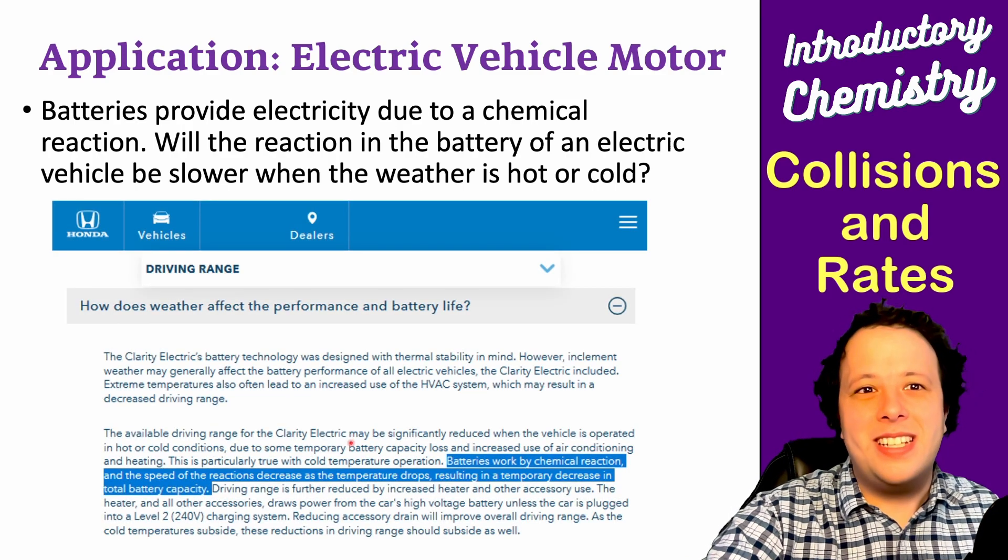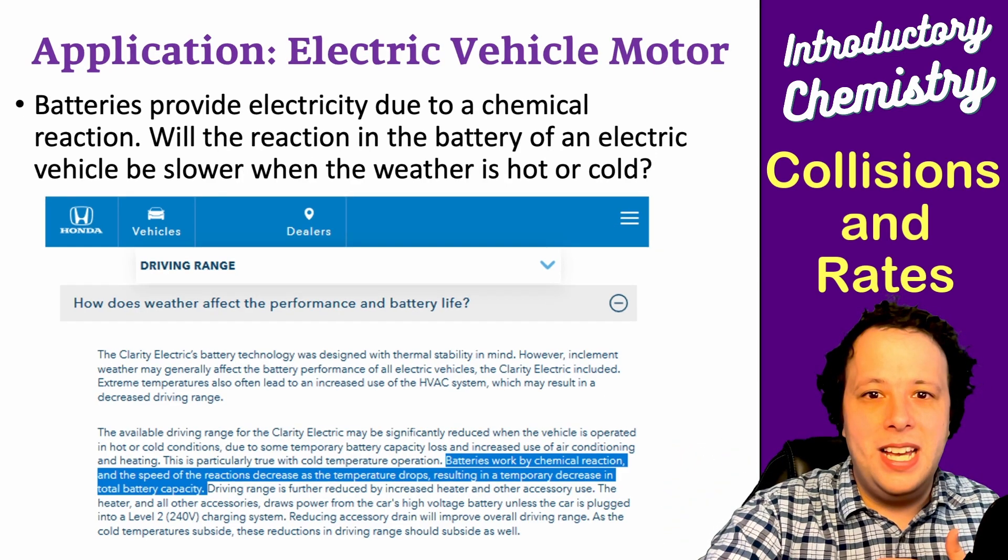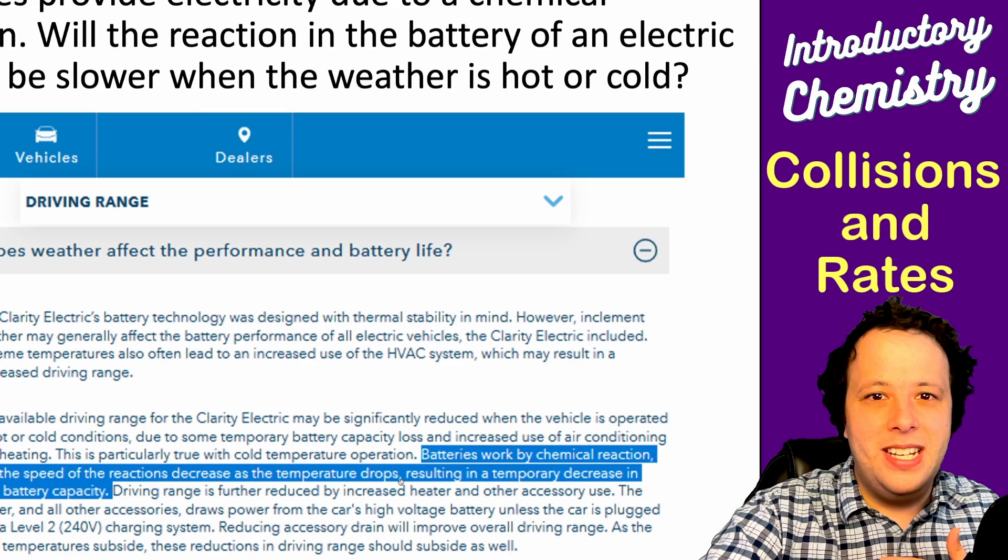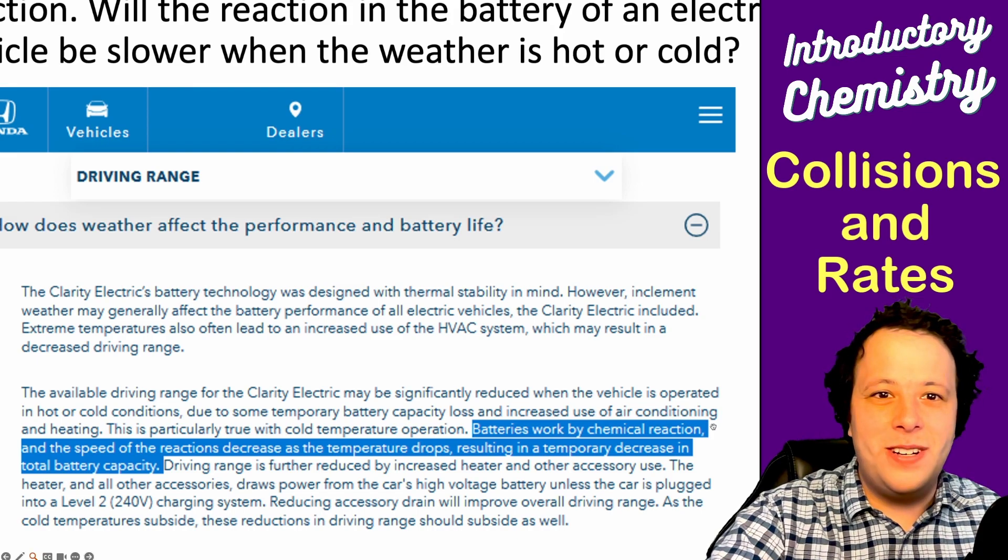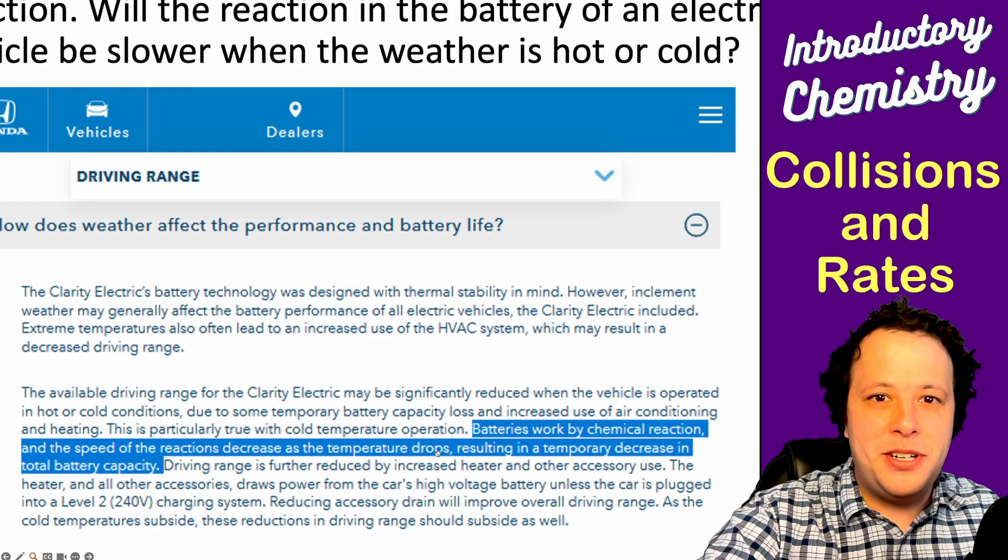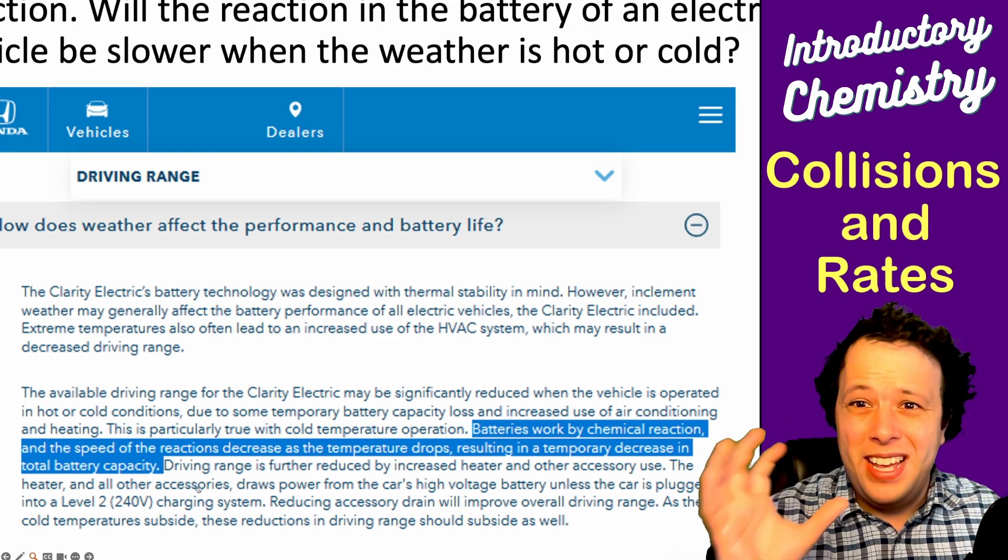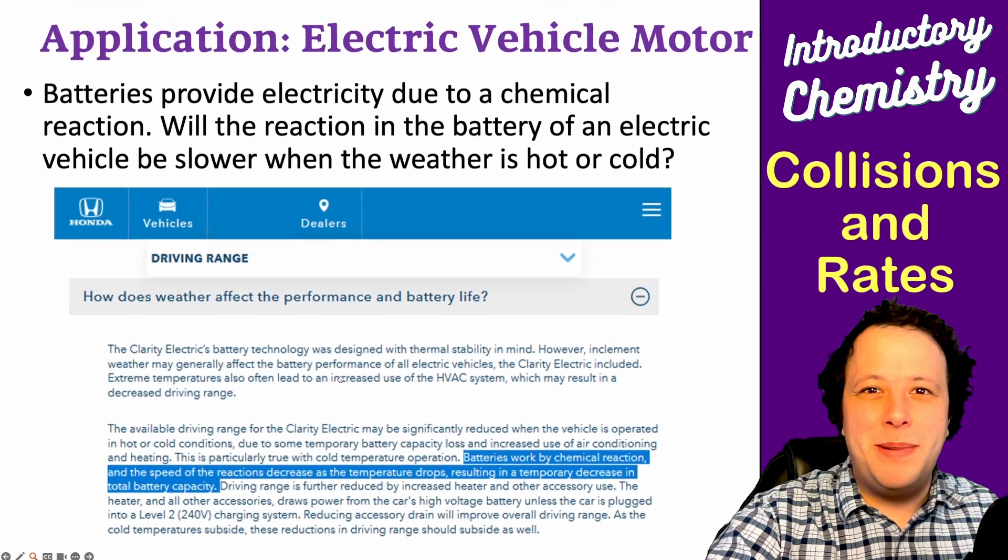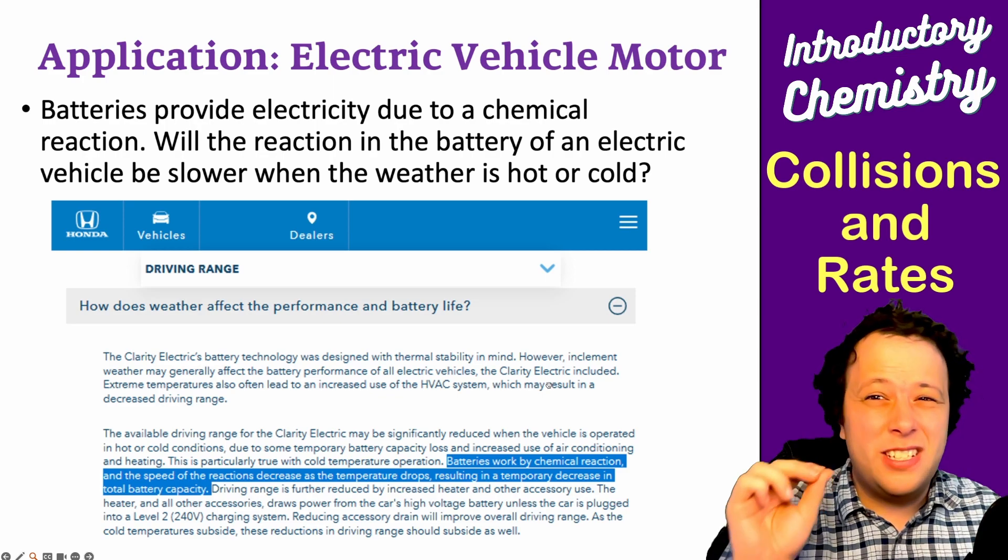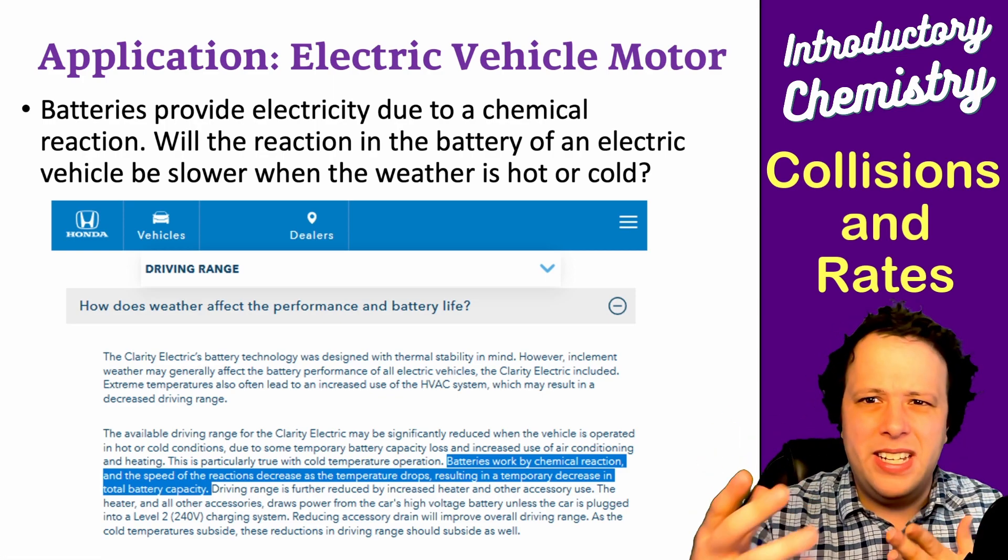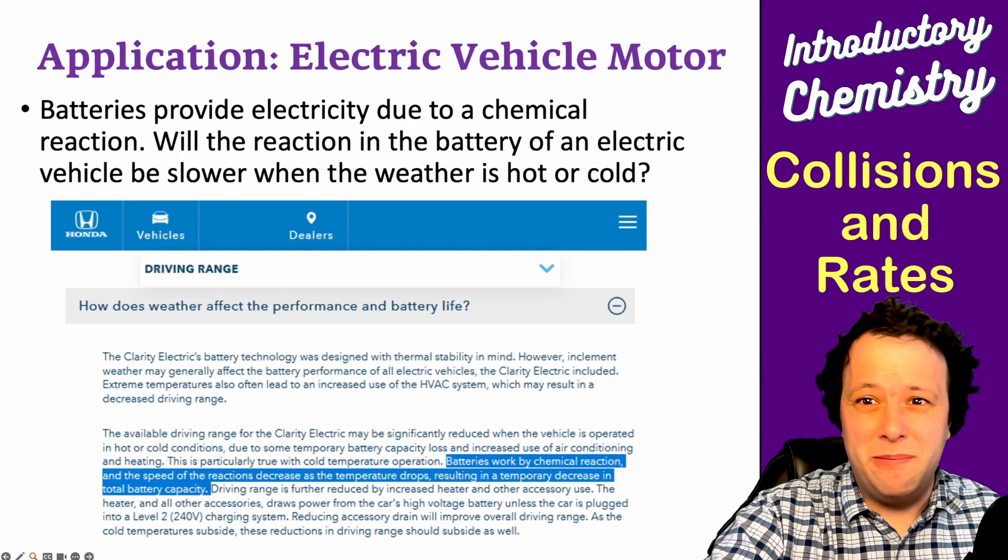In fact, if you look at Honda's, I pulled this off Honda's website for their electric cars. And the one thing that they show is that batteries work, essentially it says batteries work by chemical reaction and the speed of the reaction decreases as the temperature drops, resulting in a temporary decrease in total battery capacity. So they advertise this to you that these batteries don't quite work all the time. This is something you got to realize is a real world thing. You can see it firsthand, even in terms of how your car works or how just regular everything, everyday life works.